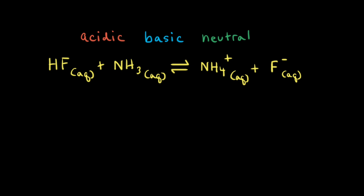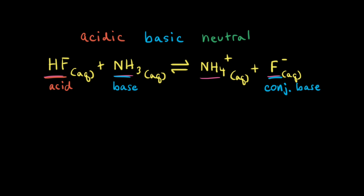Let's look at another example of a weak acid–weak base reaction. In this case, hydrofluoric acid reacts with ammonia to form the ammonium ion NH4⁺ and the fluoride anion F⁻. Because hydrofluoric acid donates a proton, it's an acid, and because ammonia accepts a proton, ammonia functions as a base. When HF donates a proton it turns into F⁻, the fluoride anion. Therefore, the fluoride anion is the conjugate base to HF. And when ammonia accepts a proton, it turns into NH4⁺, so the ammonium ion is the conjugate acid to NH3.